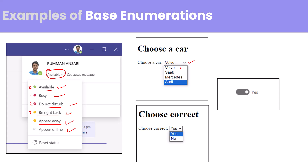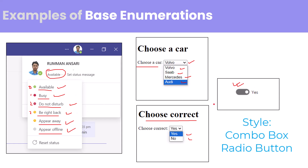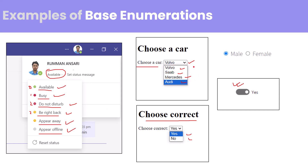You can also see a drop-down list where you choose a car — Volvo, Mercedes, Audi. Also in Dynamics 365 you can see toggle buttons (yes/no). All these types of functionalities — drop-downs, yes/no, selecting one option from a few — are where base enumeration is actually used.